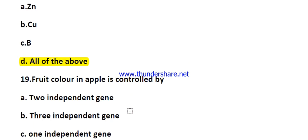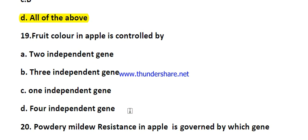Question number nineteen: fruit color in apple is controlled by — options are two independent genes, three independent genes, one independent gene, and four independent genes. The right answer is three independent genes. The independent genes are A, B, and C.